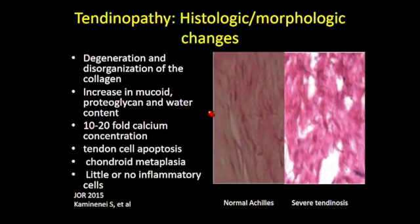When a tendon becomes tendinotic, you go from a highly organized distribution of collagen and tenocytes to a state of degeneration with dropout and disorganization of the collagen. There is increased ground substance, increased calcification, tenocyte death due to apoptosis, and chondroid metaplasia, with little or no inflammatory cells seen in this setting.